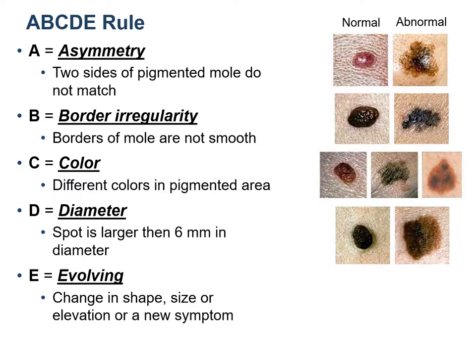B stands for border irregularity. In a normal mole the borders should be smooth, but in an abnormal mole the borders are not smooth — they are irregular. C stands for color. For a normal mole the color should be uniform and the same throughout, but for an abnormal mole it has differential color or pigmentation.